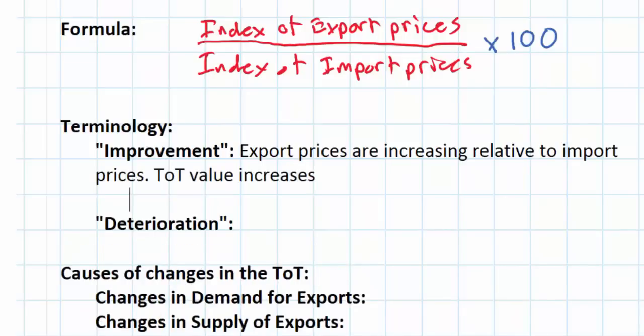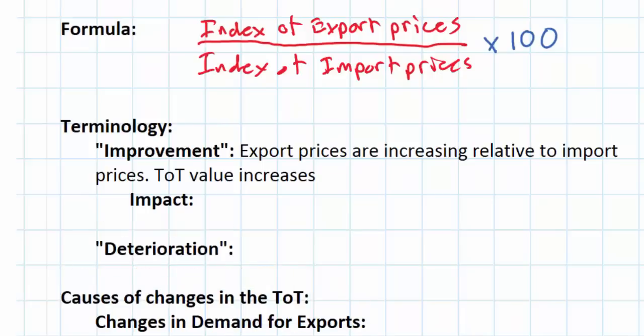Let's talk briefly about the impact that an improvement in the country's terms of trade can have. Whether an improvement in terms of trade is good or bad for the economy depends on a couple of factors. The key question is how will an improvement in the terms of trade affect the nation's macro economy — specifically, how will net exports be affected by an improvement in the country's terms of trade?